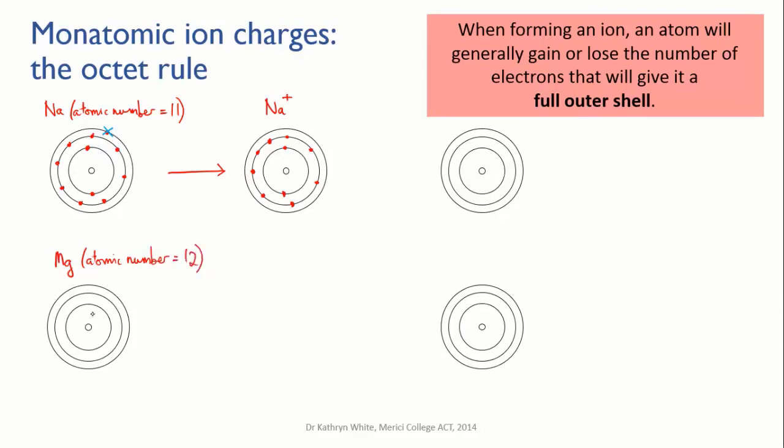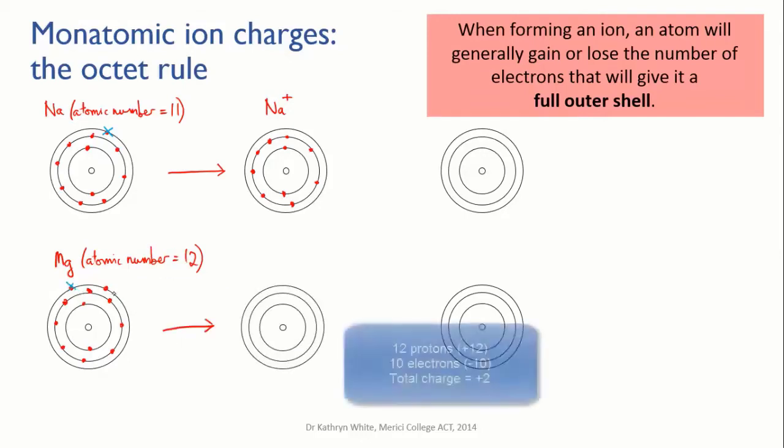Now look at magnesium. It's in group two, so it has two valence electrons. That means it can either gain six to get a full eight or it can lose two. Losing two is less complicated, so it does that. That means it now has two more protons than electrons and that gives it a charge of plus two and we write that as Mg2+.